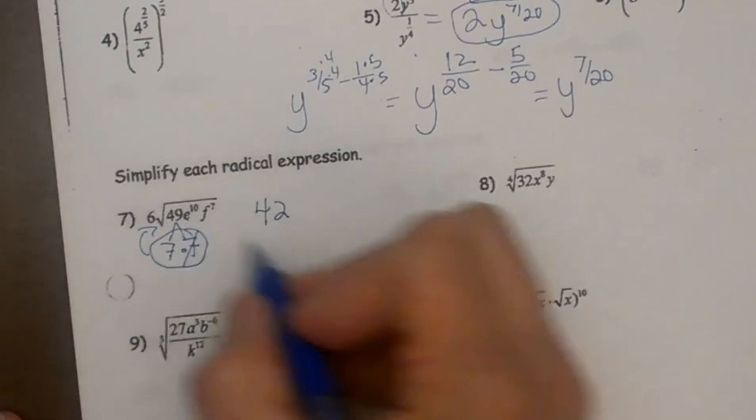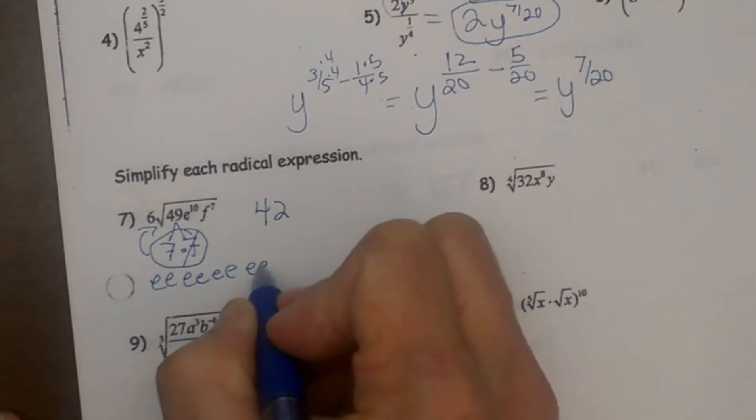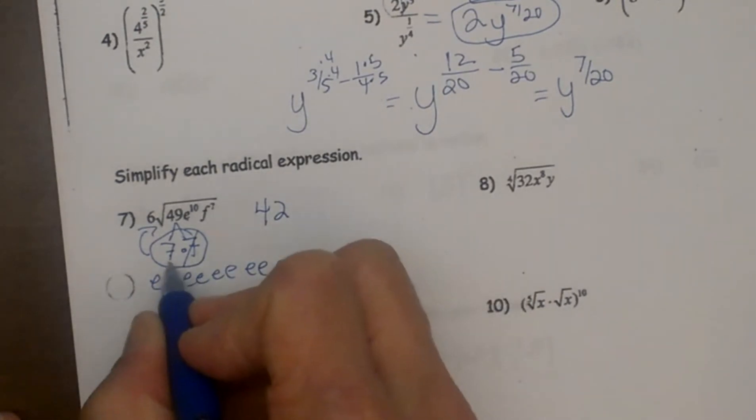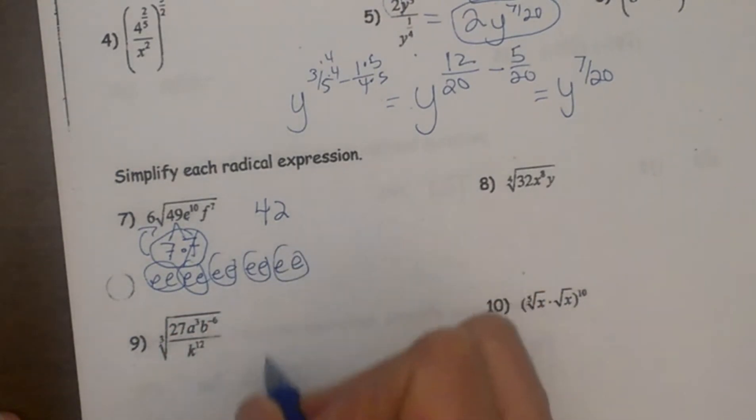Now let's look at e. I have e to the 10th. How many pairs of e's do I have when I have e to the 10th? I have 1, 2, 3, 4—I have 5 pairs.